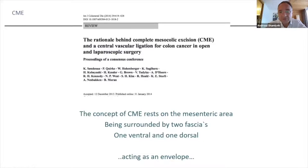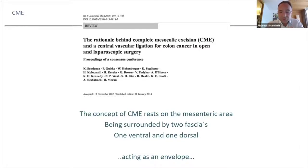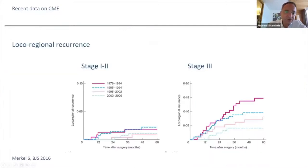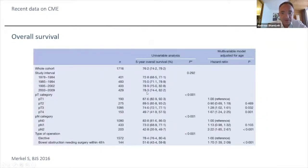The rationale behind the complete mesocolic excision is that we have two fasciae — one ventral, one dorsal — forming an envelope that should not be disturbed. Going back to Hohenberger's paper across four periods, in Stage 3 cancer the lowest local-regional lymph node recurrence rate is seen. If you look at overall survival across the four periods, in the last period the overall survival is much better: 90% in the last group versus 78% in the group from 1978 to 1984.